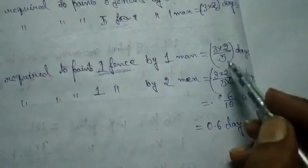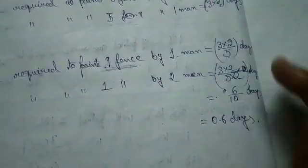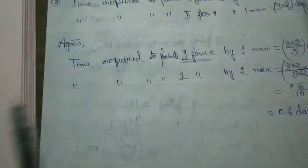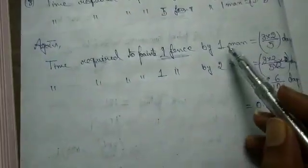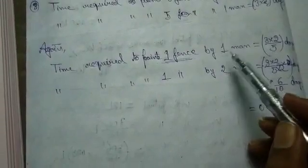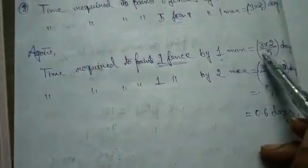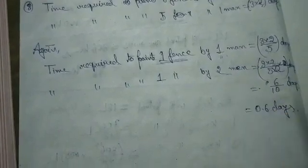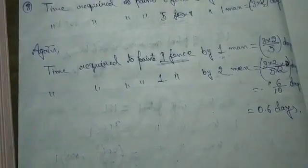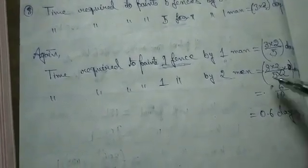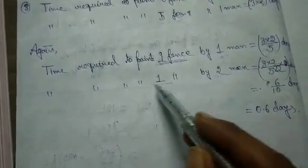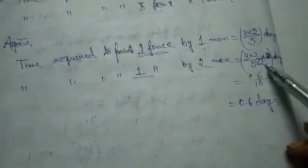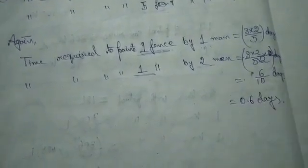In the question they asked about two men working. First I calculated how much time one man takes. Since two men are working, it will take even less days to complete the work or to paint one fence. So: (3×2) divided by 5, divided by 2, which equals 6/10 days, which is 0.6 days.